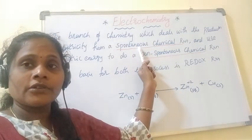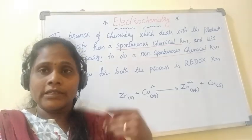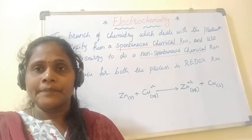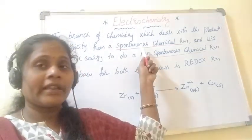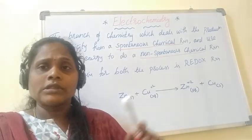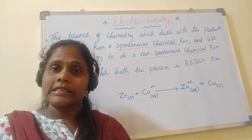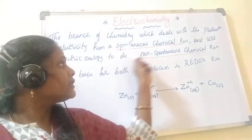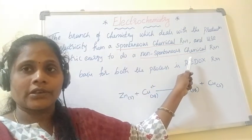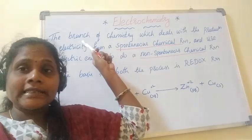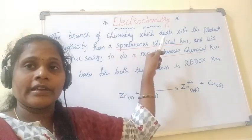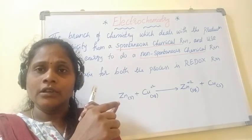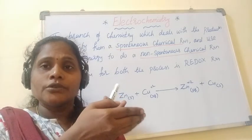What is a spontaneous chemical reaction? The reaction which undergoes by its own without the need of any external force is called a spontaneous chemical reaction. Examples: rusting of iron or melting of ice. Non-spontaneous chemical reactions cannot happen without external energy — electricity is required to perform them, or from a spontaneous chemical reaction, electricity is generated. Electrochemistry deals with both: generating electricity from a chemical reaction, or using electricity to do a chemical reaction.